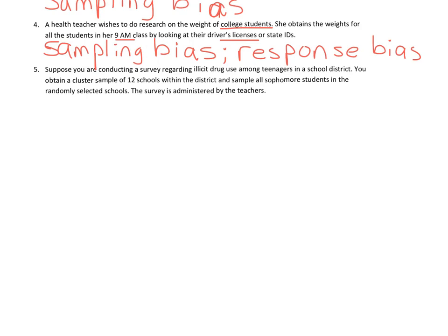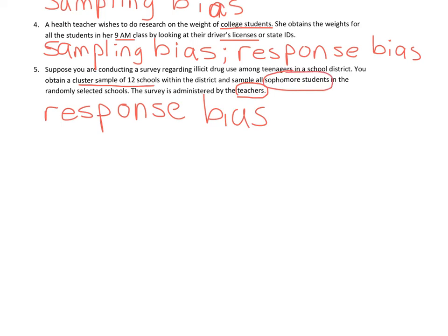Number five: a survey on illicit drug use among teenagers is administered by teachers to sophomore students selected via a cluster sample of 12 schools. Not many sophomores are going to tell their teachers they use illicit drugs, so there's response bias with interviewer error. Also, since only sophomore students were sampled, that's not necessarily representative of all teenagers in the district, so there may be sampling bias as well. A better solution: randomly select from all grade levels — freshman, sophomore, junior, senior — and have the survey administered by someone other than the teachers.